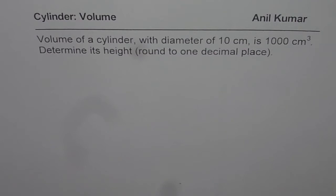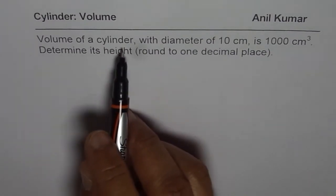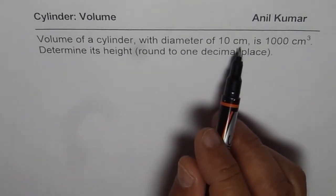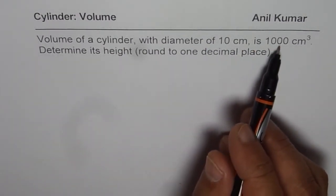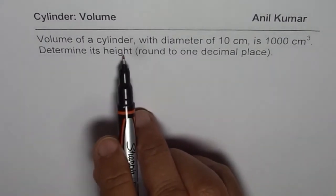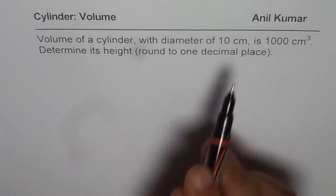We have considered a cylinder and its volume. The question here is: volume of a cylinder with diameter of 10 cm is 1000 cm³. Determine its height, round to one decimal place.